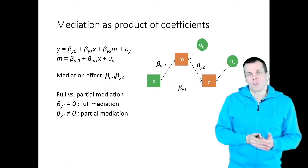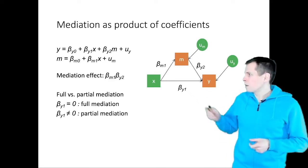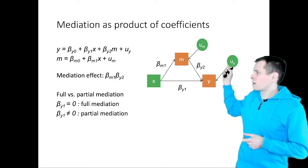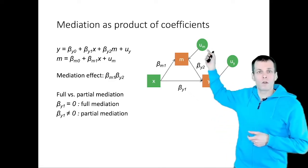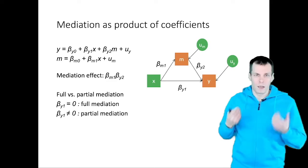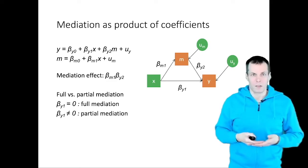The linear model can be extended by, for example, adding a correlation between the two error terms, which would make it an instrumental variable model for mediation.